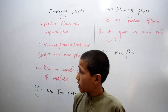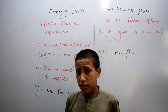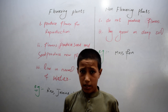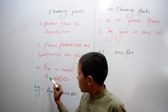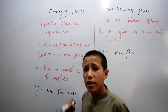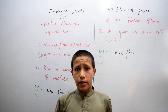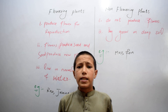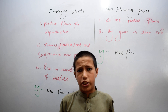The second characteristic is flowers produce seeds and seeds produce new plants. The third one is flowering plants live in normal condition of water, meaning they live in moderate conditions.